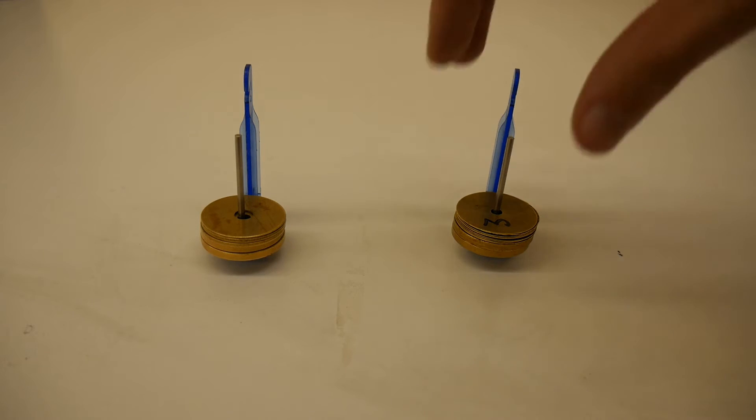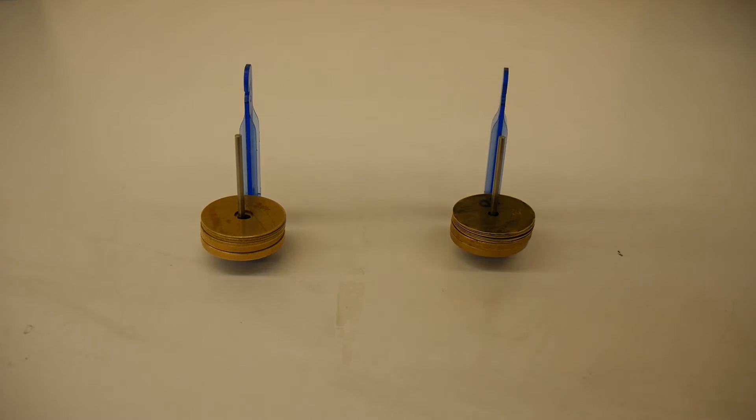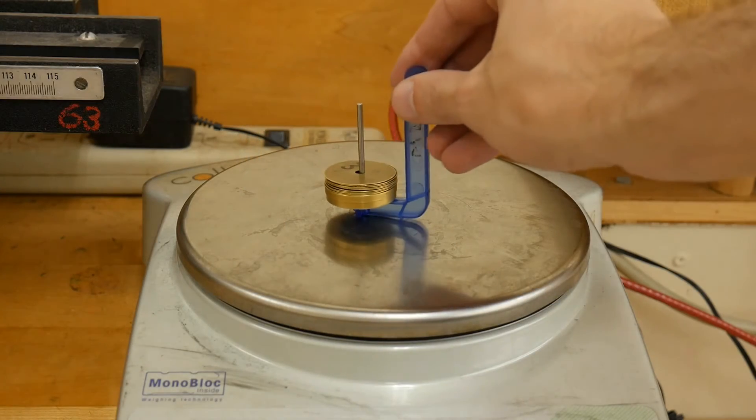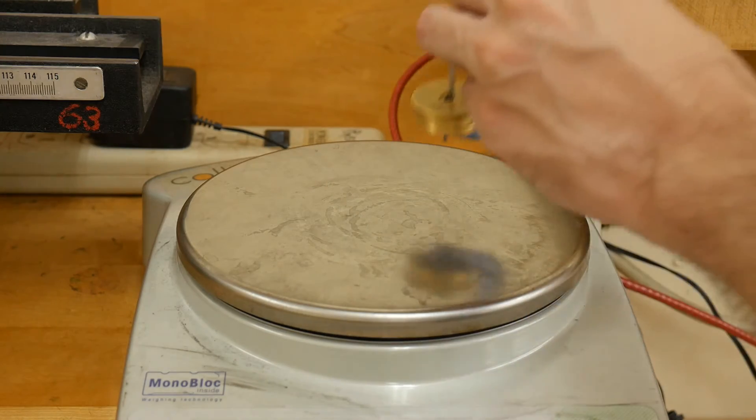Between trials, transfer one 2-gram mass from the lighter mass hanger to the heavier one. Then separately mass each hanger to find an experimental value for their masses.